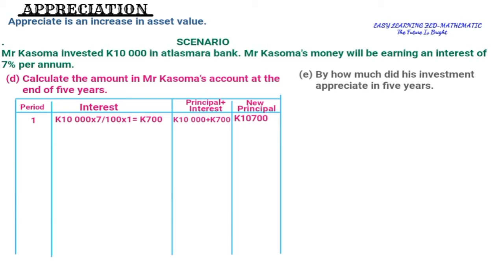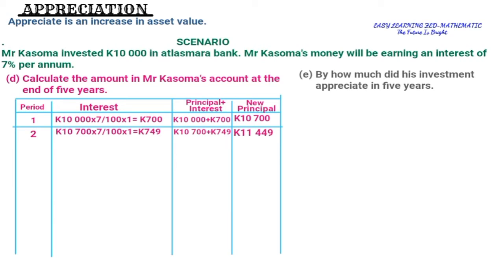Year 2: using the new principal of 10,700, multiplied by seven percent, gives interest of 749 — the same answer we got in Question C. Adding: 10,700 + 749 = 11,449. So the new principal for year three is 11,449.